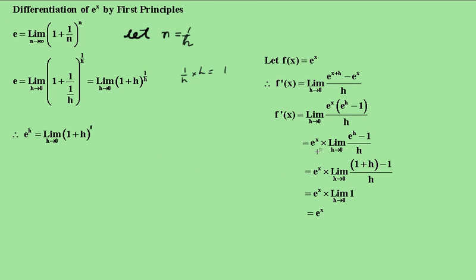We know that we can replace e to the h here with 1 plus h because that's the same thing. e to the h equals the limit as h goes towards 0 of 1 plus h. So we simply replace that e to the h with 1 plus h, and these ones will cancel out.